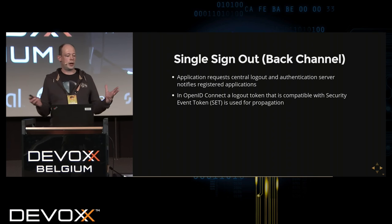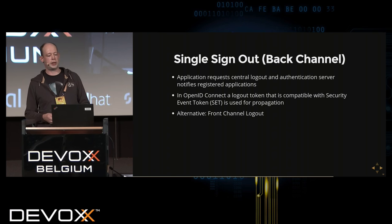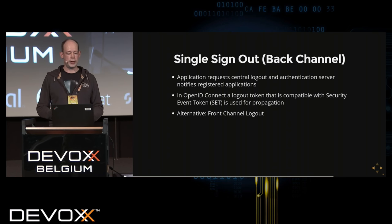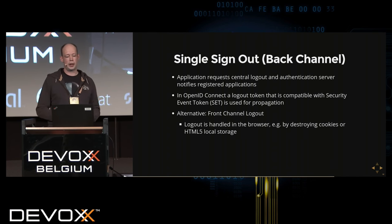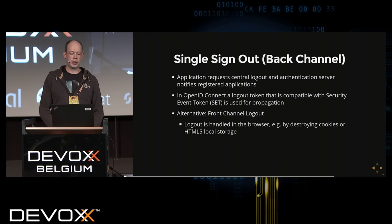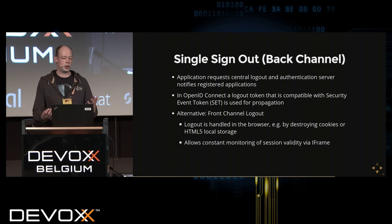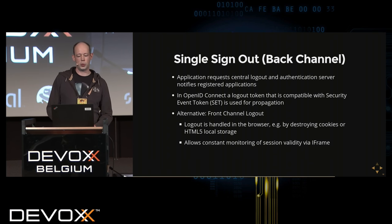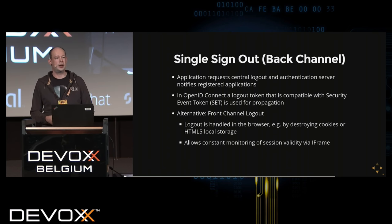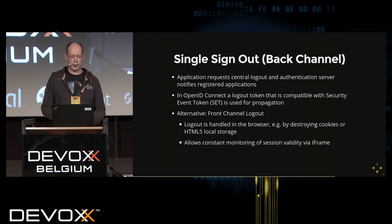If you don't want back-channel communication you can use front-channel logout, which is newer in the OpenID Connect specification and works for fully web-based environments. It relies heavily on the browser — you destroy all cookies and HTML5 local storage information in the browser, removing tokens from the front end rather than invalidating them at the back end. You can also use an IFrame to constantly poll the authentication service to check whether the session is still active.